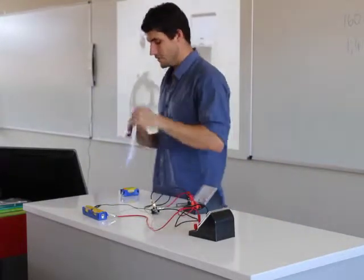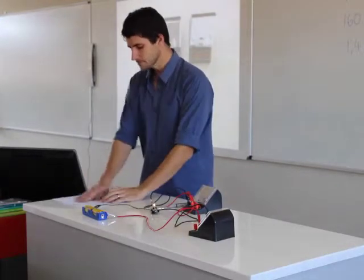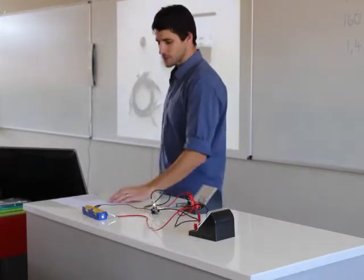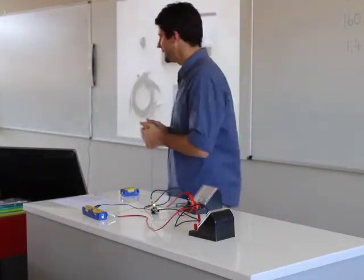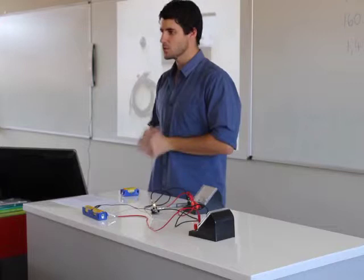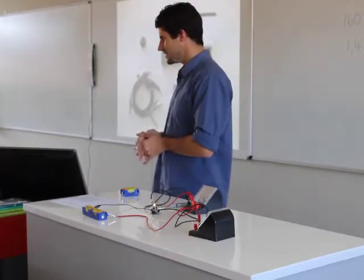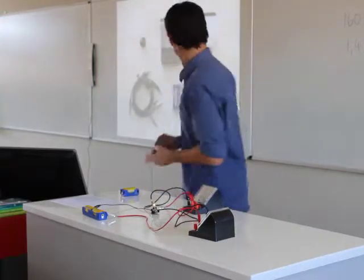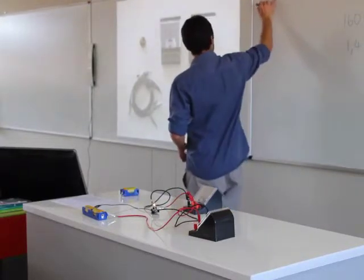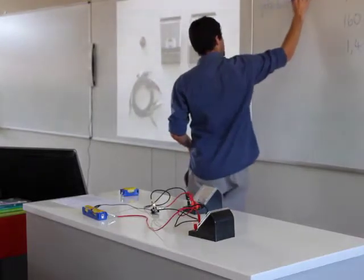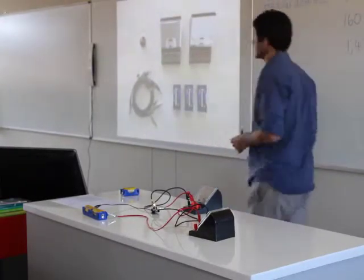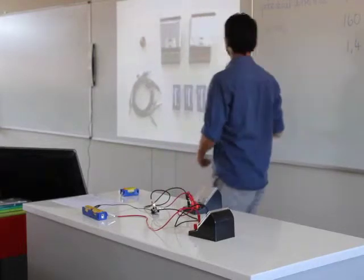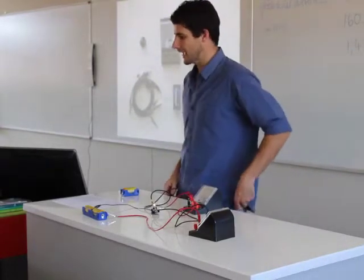On the first page of your experiment sheet there are a couple of things that I'd like you to do before we get to the experiment. The first one is the aim. The aim of this experiment is to investigate the relationship between potential difference and current. So the first blank space you can write potential difference, and the second thing is current. Those are the two things that we are looking at in this experiment.